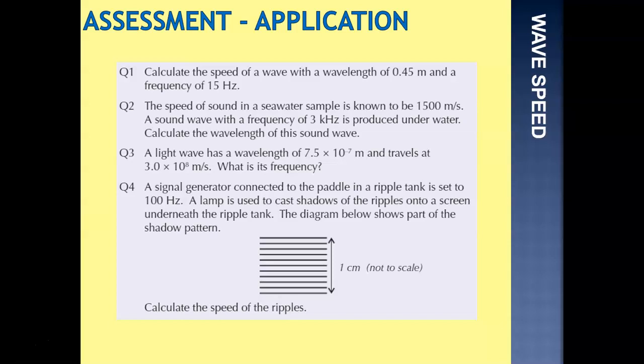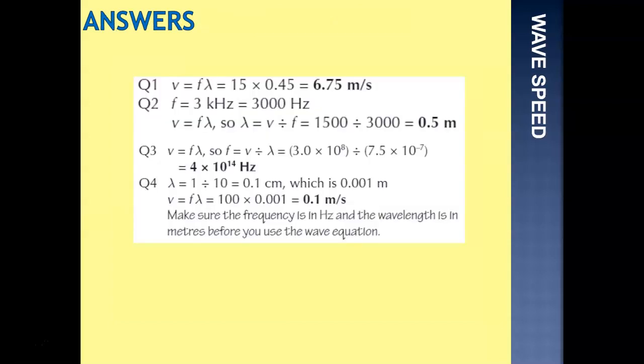So question one, calculate the speed of a wave with wavelength of 0.45 metres and frequency of 15. V equals F lambda, so frequency was 15, wavelength was 0.45, multiply them by each other and we get 6.75 metres per second.